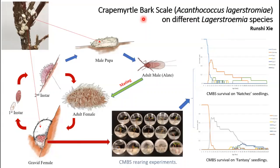Quakemoto bark scale is a non-native pest species here in the United States and it originated from East Asia. The top left image here shows you what an infestation of this insect looks like on a small quakemoto plant, and the diagram here shows you the life history of quakemoto bark scale.